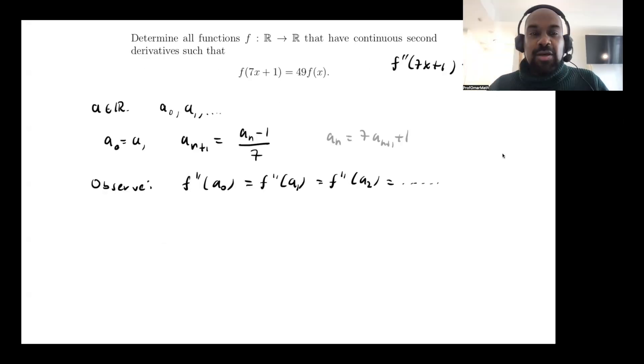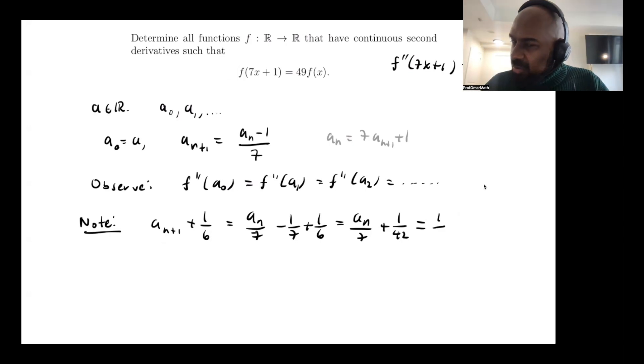Now at the same time, regardless of what a is, this sequence itself actually converges, and it converges to a constant value. The way we can note this is by looking at an interesting phenomenon with the actual sequence. If we look at a_{n+1} and actually added 1/6, what would happen? We would get a_n over 7 minus 1/7 plus 1/6. And this equals a_n over 7 plus 1/42. And if we factor out a seventh here, we'll get a seventh times the quantity a_n plus 1/6.